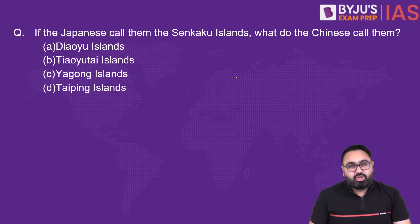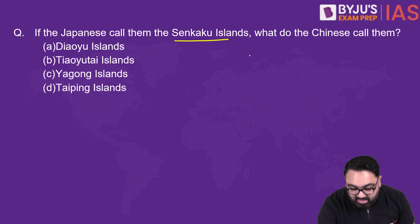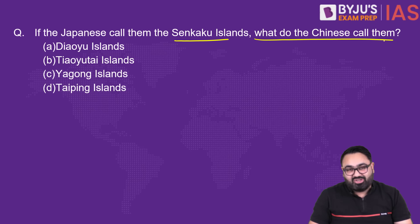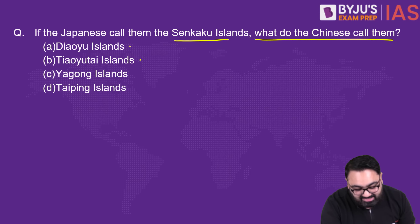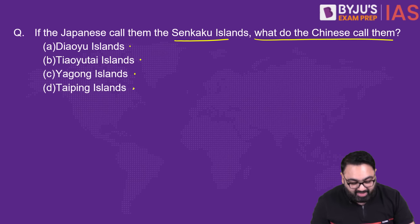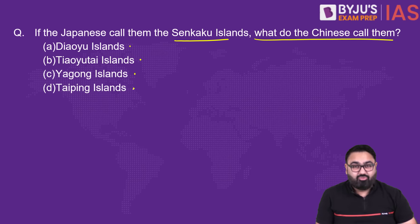Question number two: if the Japanese call them the Senkaku Islands, what do the Chinese call them? Options: A) Diaoyu Islands, B) Tiaotai Islands, C) Yangon Islands, D) Taiping Islands. Think about it — take 30 seconds. Usually, whenever two countries have a territorial dispute, especially with China, each side gives a different name to that territory.